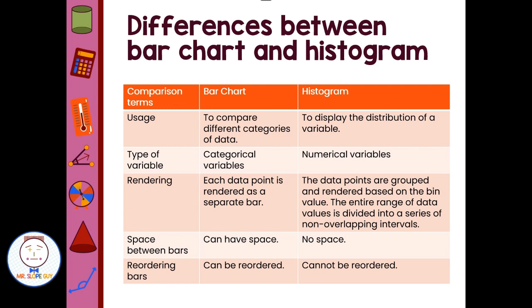And reordering bars. A bar chart, you could change the order. But in a histogram, you can't change the order because you're generally working from least to greatest. And you have these set bins, and you're not going to just move them that are not in numerical order. As opposed to a bar chart, you could just switch which variable you want to display.